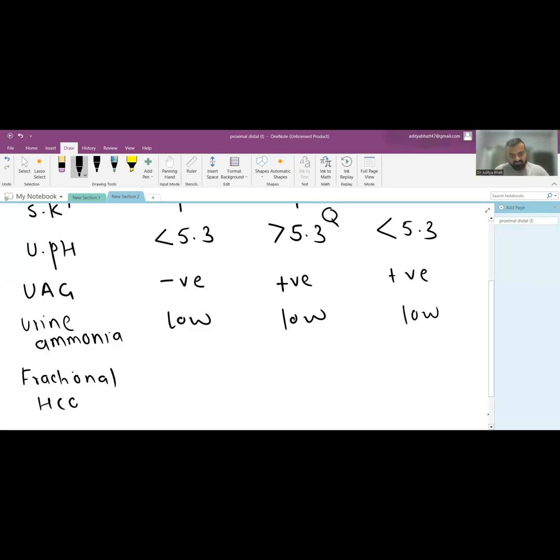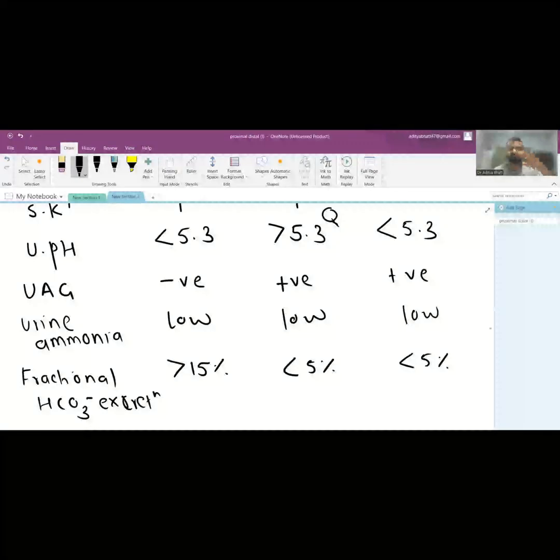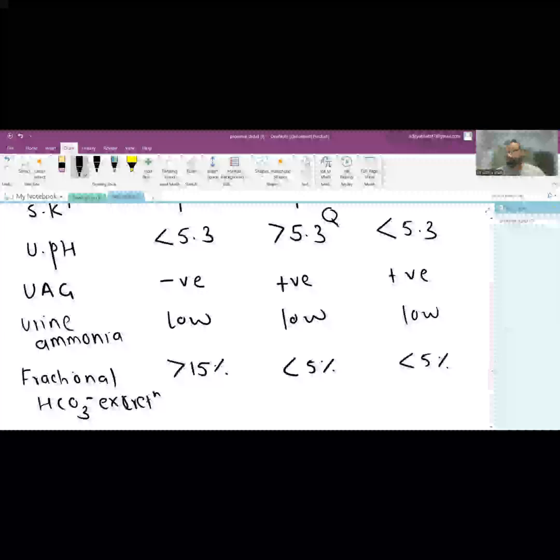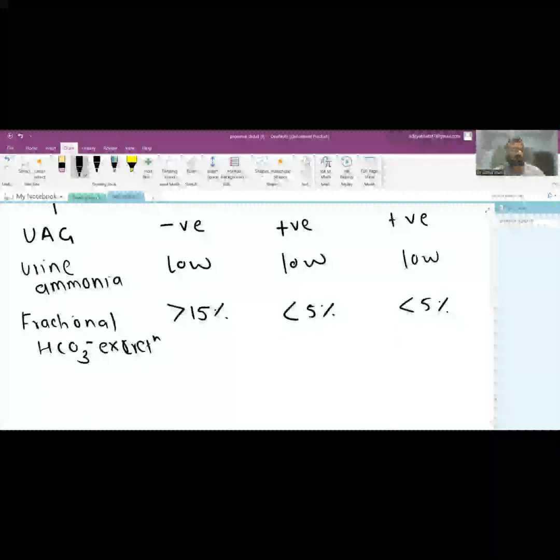Fractional bicarbonate excretion—the fraction of bicarbonate that is excreted compared to what's available from serum bicarbonate. Bicarbonate is very important for alkalizing the blood, so not much is excreted, especially during acidosis. But in type 2, proximal RTA, there is an abnormality where bicarbonate excretion is more than 15%. In other conditions, it is less than 5%. In type 2 RTA, bicarbonate is excreted more than it should be.